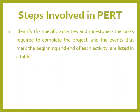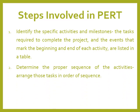The first step in PERT is to identify the specific activities and milestones. The tasks required to complete the project and the events that mark the beginning and end of each activity are listed in a table. The next step is to determine the proper sequence of the activities.